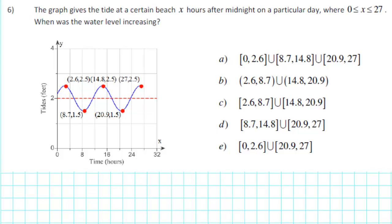The graph gives the tide at a certain beach x hours after midnight on a particular day, where x ranges between 0 and 27. When was the water level increasing?